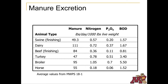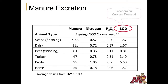A common way to measure manure production is with daily excretion, by weight of manure — feces and urine — pounds of nutrients such as nitrogen and phosphorus, commonly quantified in the form of phosphate, and BOD or biochemical oxygen demand, a common measure of the organic content of the manure.